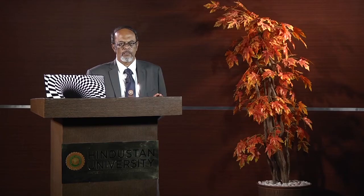Now the pointer has started moving — where does it stop? And once it has stopped, what brings it back to zero? So you have one more system called a controlling system, which produces a controlling torque opposite to the deflecting torque. When these two torques are in equilibrium, it brings the pointer to a stop. So if I am measuring 15 volts, I will not end up reading 25 volts. And as soon as the input signal is removed, the controlling torque brings the pointer back to zero.